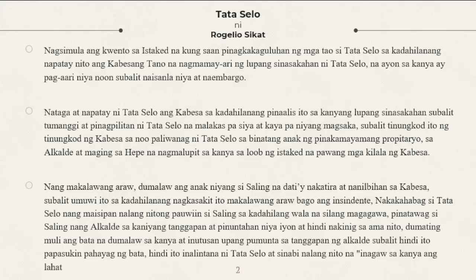Nais ni Tataselo na mapabalik ang lupa nila sa kanila pero dahil sa kawalan ng pera, hindi na ito napabalik sa kanila. Kaya nakiusap na lang siya sa Kabeza — ang pangalan ay si Kabeza Tano — na siya na lang ang magsaka sa kanyang lupa. Hanggang sa isang araw habang nagsasaka si Tataselo, kinausap siya ni Kabeza Tano na umalis sa sinasaka niyang lupa dahil may iba na magsasaka noon.